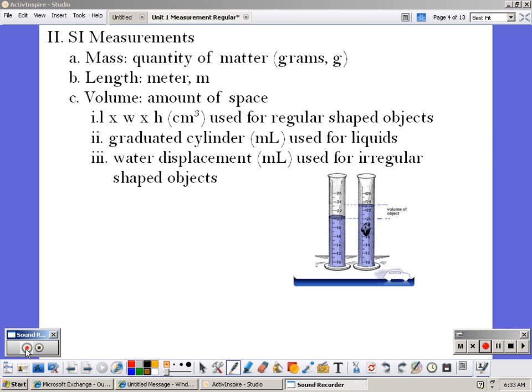If the object is a regular shape, meaning that there's a formula from geometry, then you use the formula. So if it's a cube, which is what we would see in our class, we would do length times width times height. If it's a liquid, we've already talked with our equipment that we would use a graduated cylinder to measure the volume.